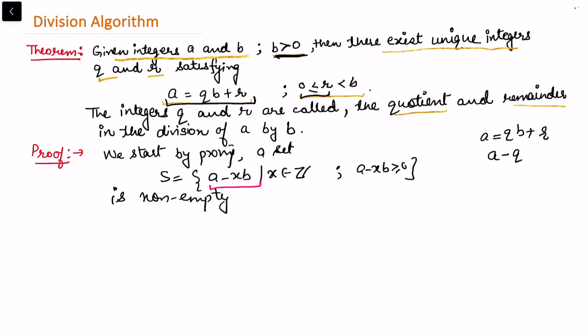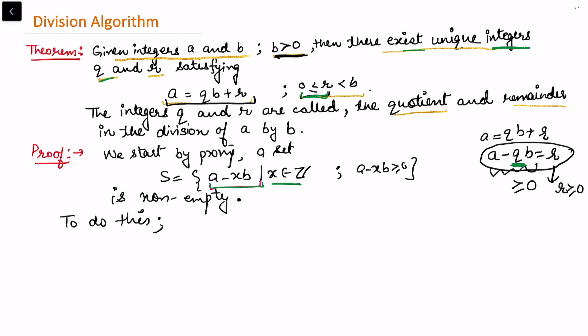So we are essentially working with the remainder. If we can show the left-hand side a − xb is greater than or equal to zero, then r ≥ 0, which proves that inequality. The set S is constructed with x ∈ ℤ, just as q is an integer in the theorem. Now we want to show S is non-empty.